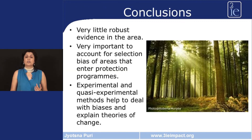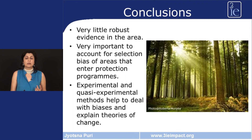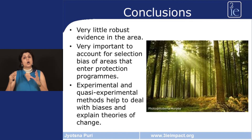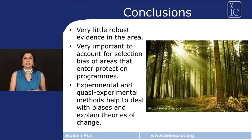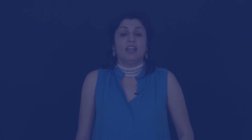Our conclusions are: overall, there is very little robust evidence in the area of climate change and environment, especially in studies that determine the attributable impact of these programs on environmental outcomes. Second, it is very important to account for selection bias. Third, experimental and quasi-experimental methods can help deal with these biases and also explain theories of change. The overall message is that impact evaluations can be extremely helpful in determining whether conservation and forestry programs should be undertaken at all, and to what extent they can promote lesser deforestation and greater mitigation of climate change.